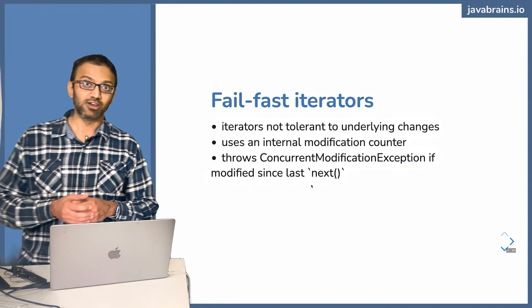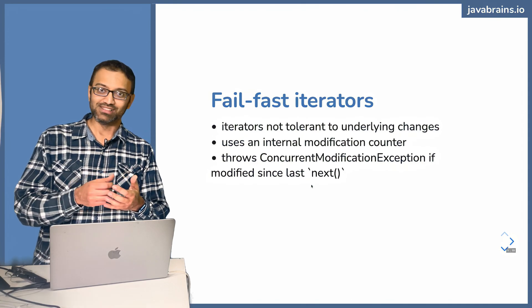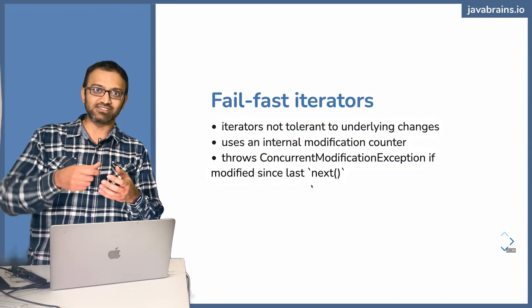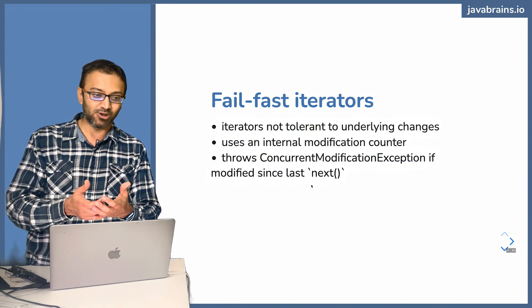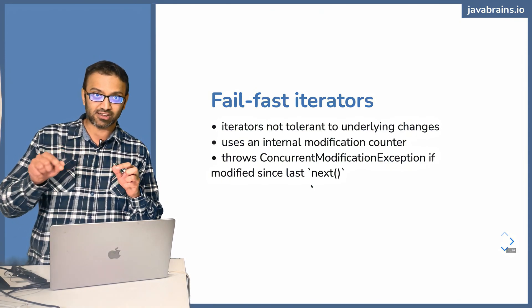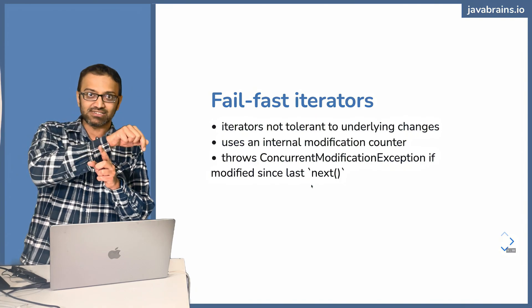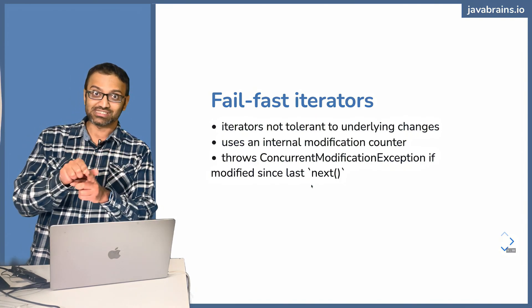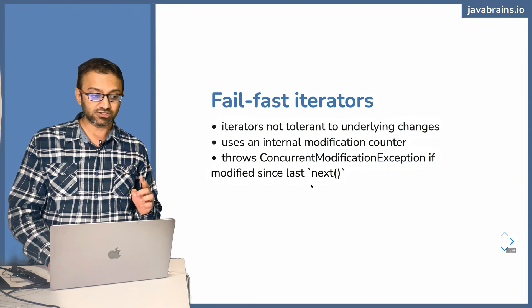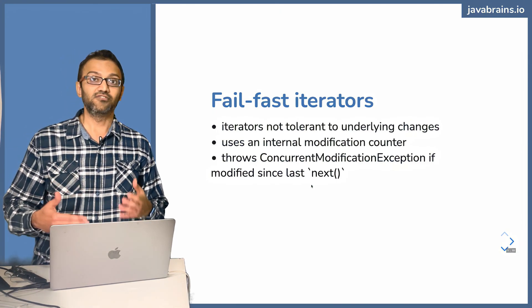It's almost like counting currency — if somebody comes and pulls out or inserts currency while you're counting, you're going to stop and start from the beginning. The iterator assumes that while it's iterating, nobody should be changing the collection, because it doesn't know what to do. For example, if somebody adds an entry partway through, should the iterator go back or stay where it is? It doesn't know — it breaks the contract the iterator has. This is what is called fail-fast iterators.